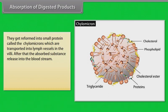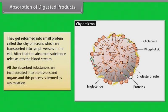The micelles get reformed into small protein particles called chylomicrons, which are transported into lymph vessels in the villi. After that, the absorbed substances are released into the bloodstream. All absorbed substances are incorporated into tissues and organs, and this process is termed assimilation.